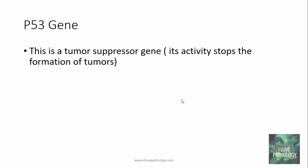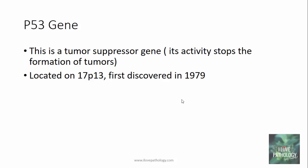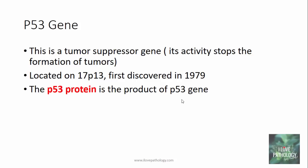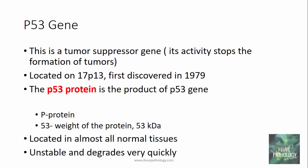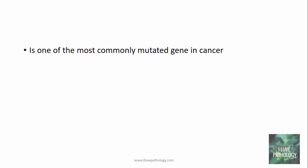p53 gene is a tumor suppressor gene, called so because its activity stops the formation of tumors. This particular gene is located on the short arm of chromosome number 17 and it was first discovered in the year 1979. The p53 protein is the product of p53 gene, where 'p' stands for protein and '53' stands for the weight of the protein, that is 53 kilodaltons. It is located in almost all normal tissues, it's very unstable and degrades very quickly, and it is one of the most commonly mutated genes in cancer.